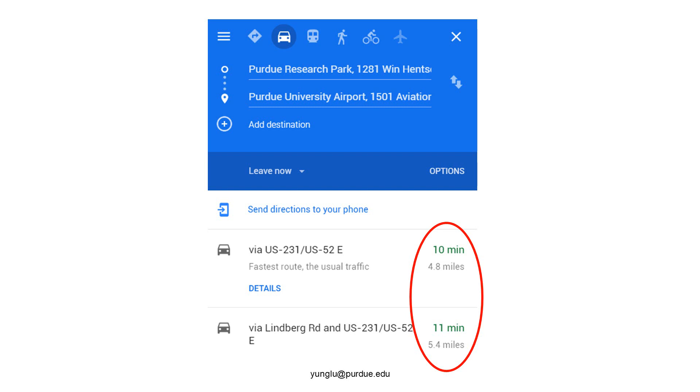Imagine that you want to go from Purdue's Research Park to Purdue Airport by car, the top two routes take 10 and 11 minutes respectively.